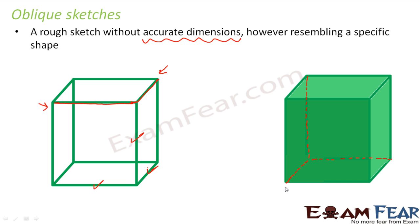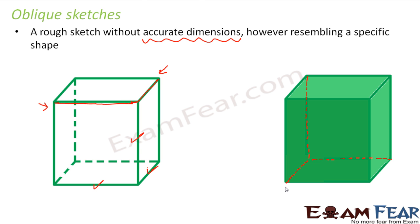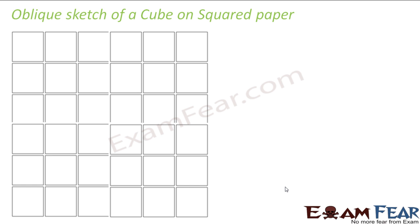Now let us try to draw some oblique sketches. Let us draw the oblique sketch of a cube on squared paper. Squared paper is like graph paper where the entire paper is divided into small squares. To draw better oblique sketches, squared papers help because they give you some idea about the dimensions — not real dimensions, since we are not working with accurate dimensions, but at least a rough idea.